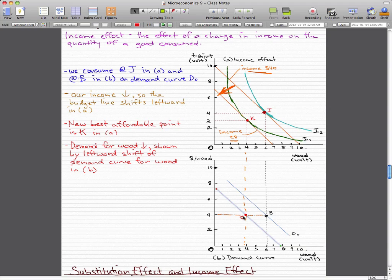K is the point at which the tangent line meets the indifference curve. And then we reflected that onto graph B. And then our demand for wood decreased, and that is shown by the leftward shift in our demand curve from D0 to D1.